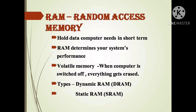RAM holds the data the computer is currently processing. That's why RAM determines your system's performance — the faster the RAM, the faster the processing speed. For example, our phone specifications show 4GB RAM or 8GB RAM. This refers to the data from all currently opened apps being held in RAM.